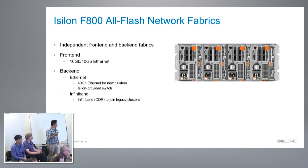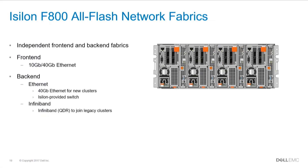For network fabrics, front-end and back-end are independent fabrics. On the front-end side we support 10 GbE and 40 GbE — for the F800 we recommend 40 GbE, but 10 GbE is also supported if the infrastructure doesn't support 40. Front-end is primarily for client traffic and is separate from the back-end. On the back-end we have Ethernet at 40 GbE for new clusters. InfiniBand is also supported if you want to join legacy clusters that only support InfiniBand.